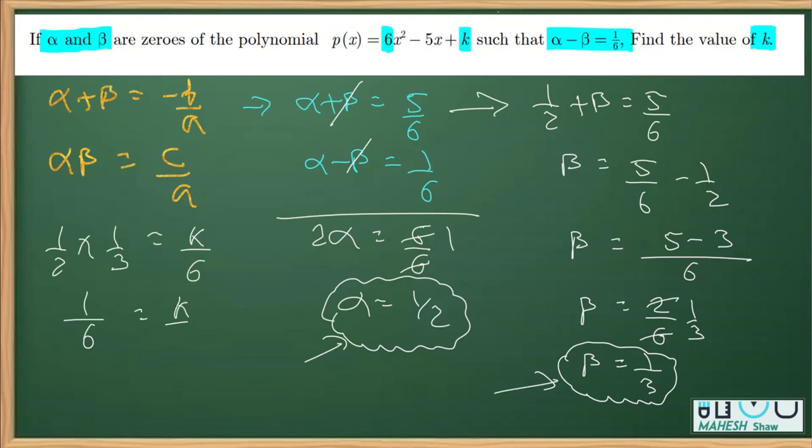This is 1 over 6. 2 into 3 is 6. This is K over 6, so we'll get K equals 1. K equals 1 is the answer.